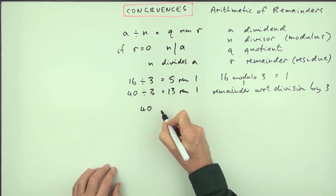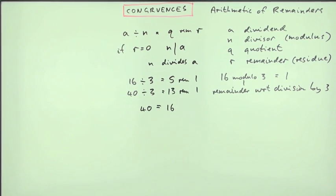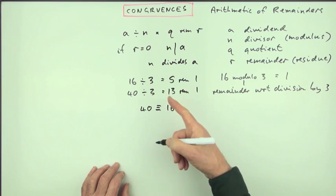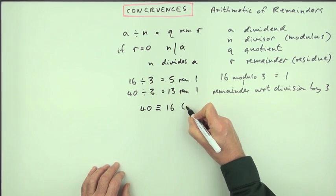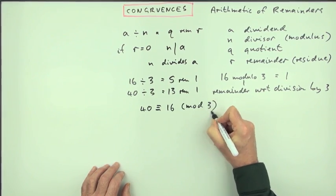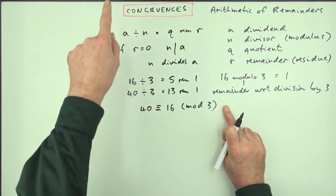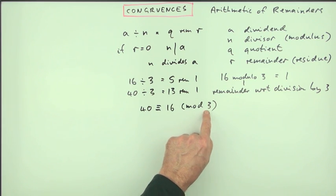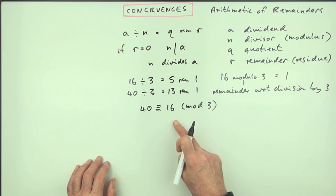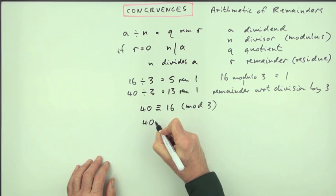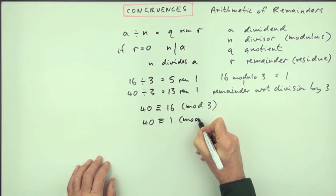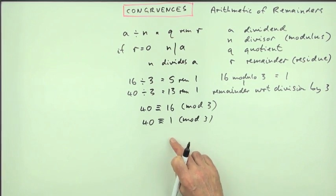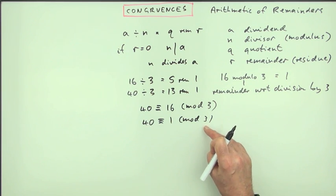As far as the remainder with respect to division is concerned, as far as this modulo is concerned, they both give 1. They're both identical in that respect. So you can write 40 is congruent to 16. Now it's only congruent to 16 in respect of division with respect to 3. So in brackets afterwards you would write modulo 3. That's the classic statement in congruences. The simplest remainder is 1. That's the residue. It has to be less than the dividing number.